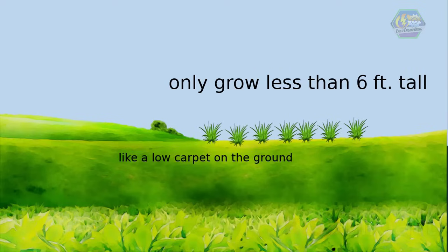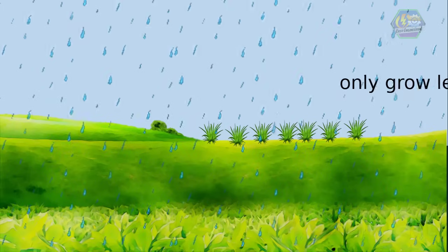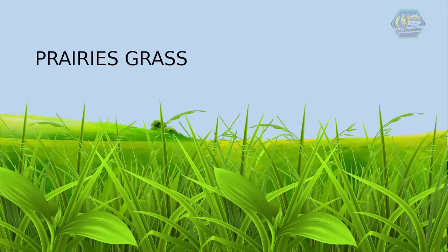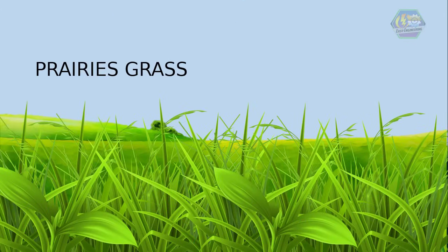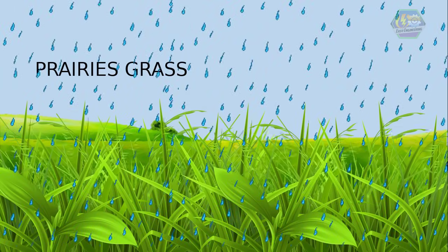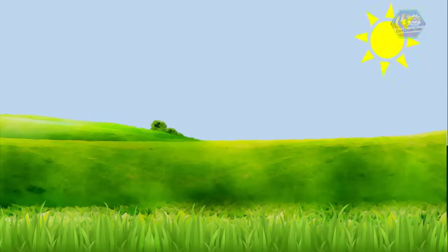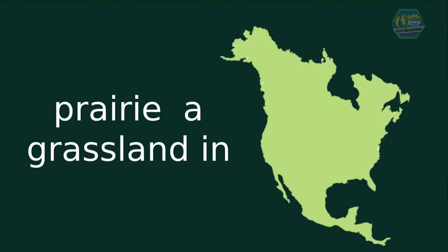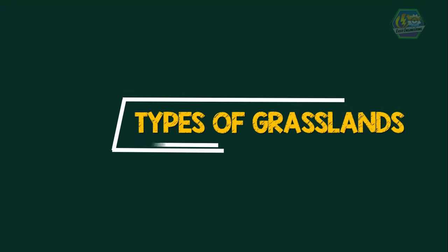That's why they only grow less than six feet tall, and oftentimes they are just like a low carpet on the ground. When grasslands get rain more often, tall grass prairies grow, like in southern parts where the climate is a little warmer. In northern climates with hot summers and cold winters, the grasses are shorter because they get less rain. A prairie is a grassland found in North America.